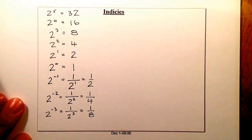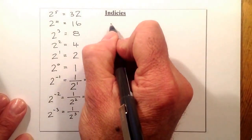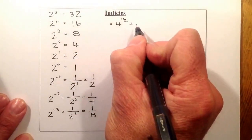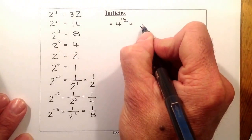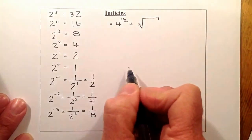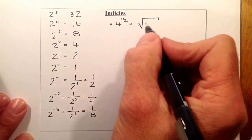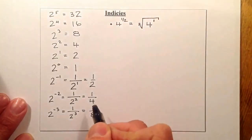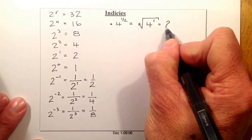Now let's look at the link between fractional indices and roots. Take 4 to the power of a half. Converting into root form: the 2 on the bottom of the fraction goes to the root sign — normally we don't show that 2 because that sign is the square root we usually use — and the 1 on top is the power. So we're just looking for the square root of 4, which is 2.